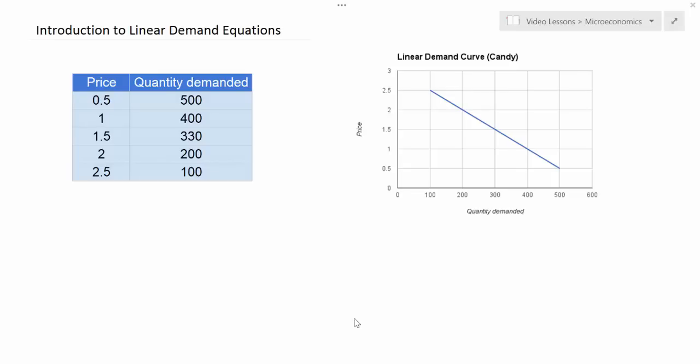You'll recall from earlier lessons on demand that I used the example of a survey that I gave to my class to determine the demand for candy in a week at a range of prices, from $2.50 down to $0.50.